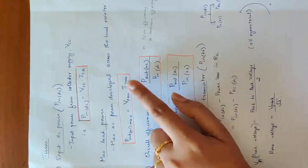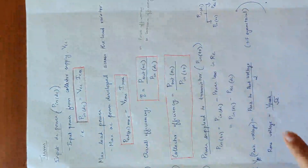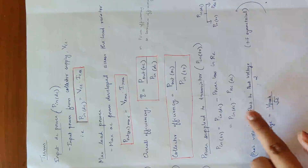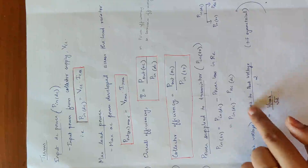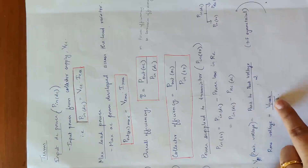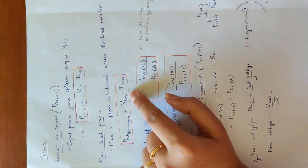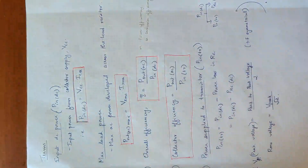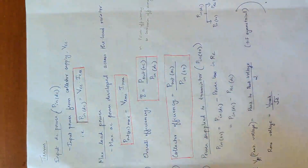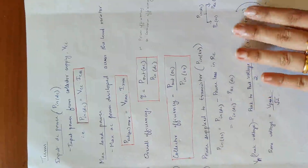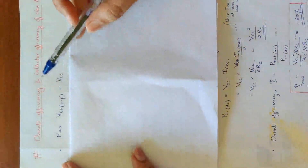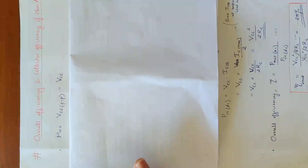Output AC power equals Vrms into Irms. We look at Vrms and Irms — starting with peak voltage, then peak-to-peak voltage divided by half. We have an equation for AC output and for DC, and we substitute into the equation.